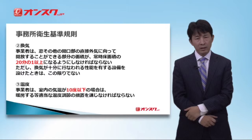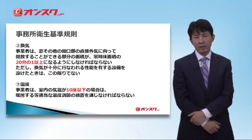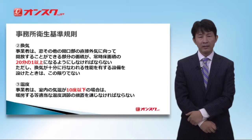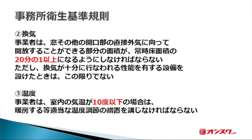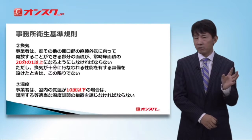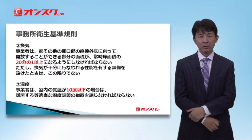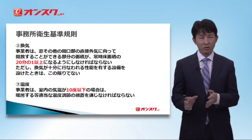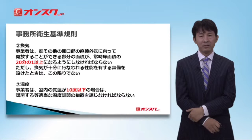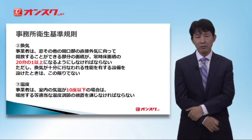事業者は窓その他開口部分の直接外気に向かって開放することができる部分の面積が、常時床面積の20分の1以上になるようにしなければならないということが求められています。試験問題では窓の面積を床面積の15分の1以上にした場合に法律上問題あるかどうかという形で出題されますが、15分の1の方が面積として広くなりますので20分の1以上の中に含まれ、問題ないということになります。単純に数字の大小で判断せず、切り分け方で考えていただければと思います。